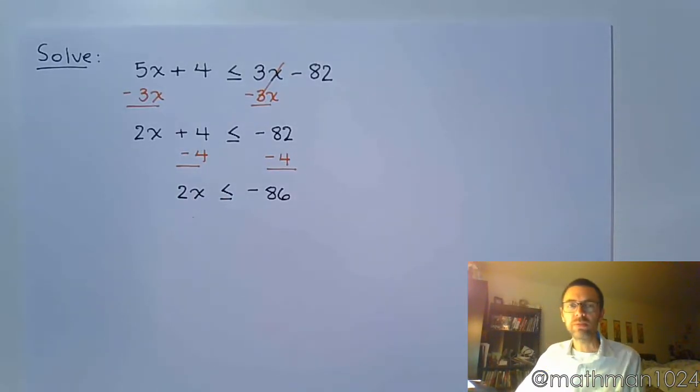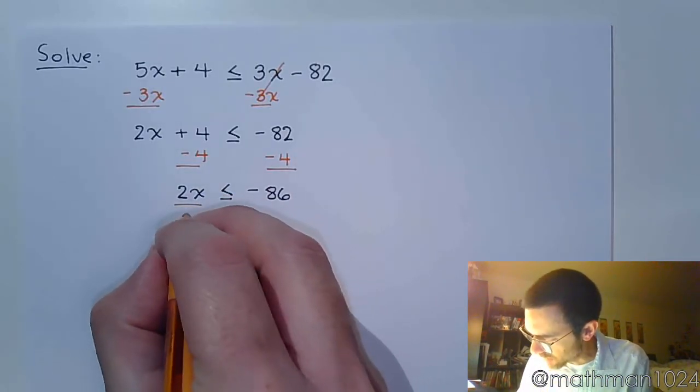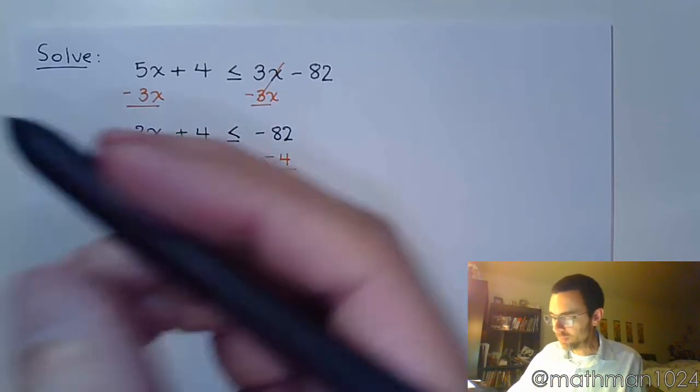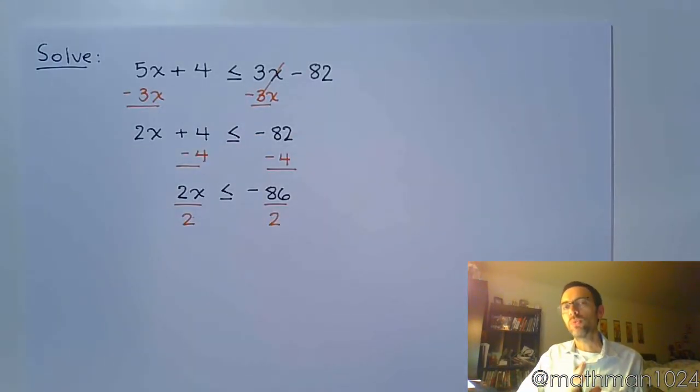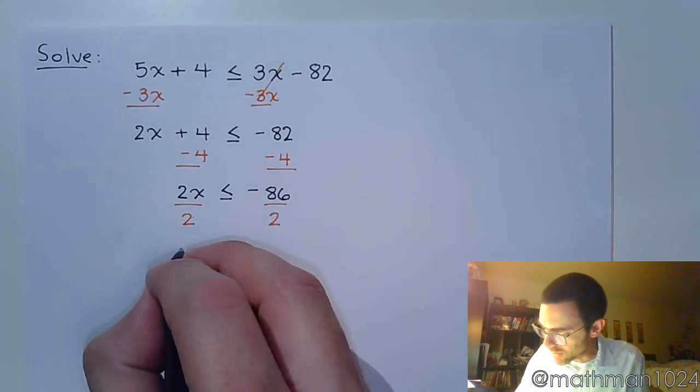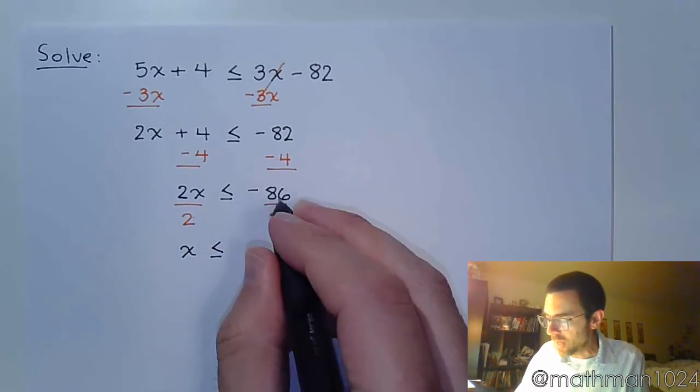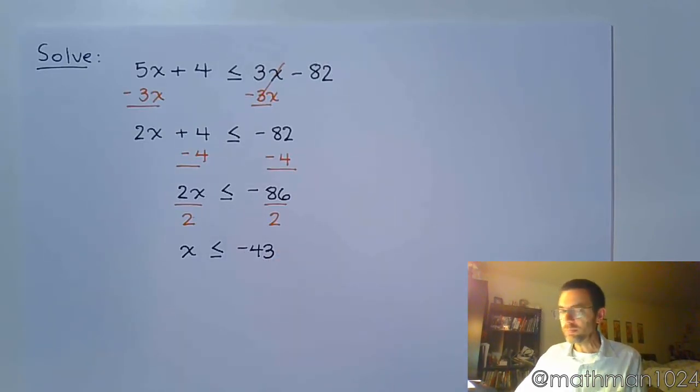I get negative 86. We're almost there. Last step of getting x by itself is to divide both sides of the equation by 2. Don't get thrown off—we're dividing and there's a negative that's involved here, but remember the rule states that if you multiply or divide by a negative, the inequality symbol changes directions. But we're dividing by a positive 2, so the inequality is going to remain as less than or equal to, and negative 86 divided by 2 is negative 43.